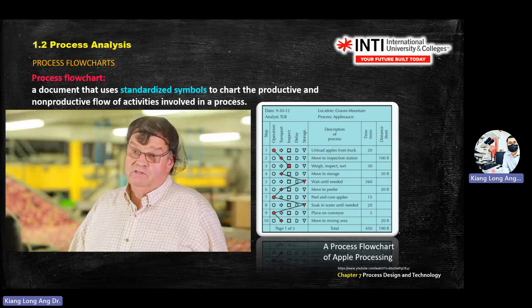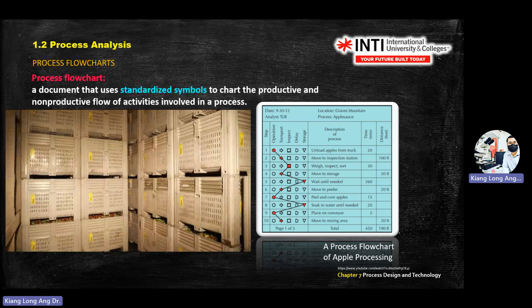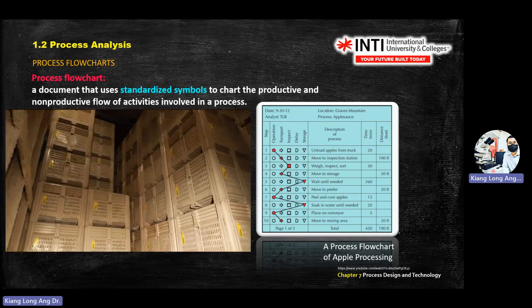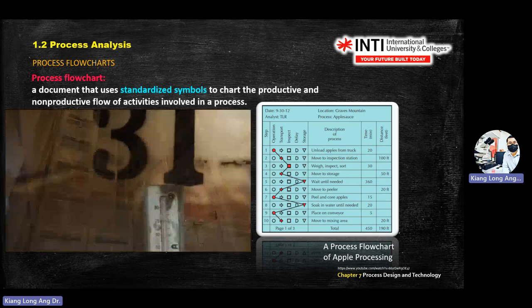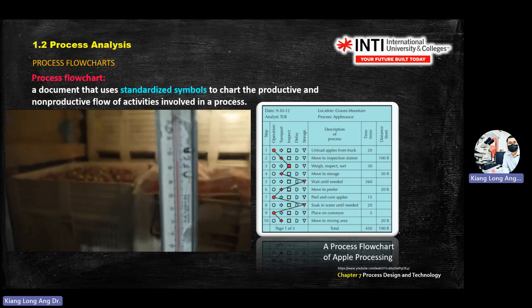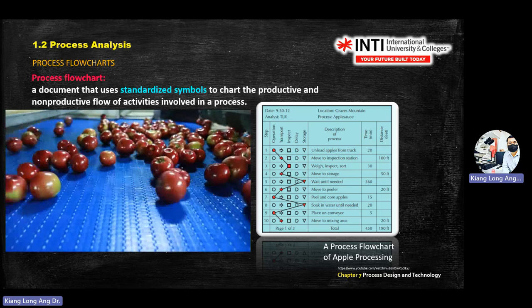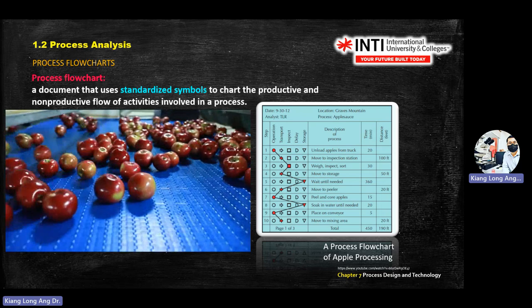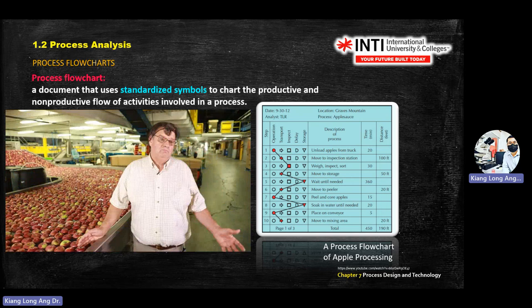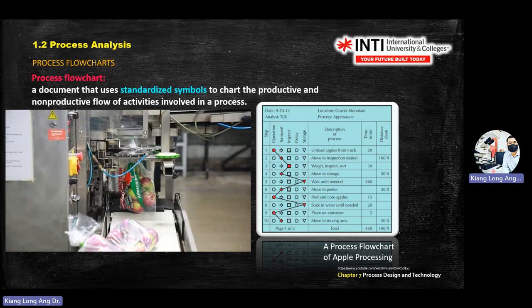The key to keeping apples fresh is picking them at the right time and then putting them into controlled atmosphere storage rooms. An apple breathes carbon dioxide out and oxygen in, so we reduce the oxygen level to suppress respiration — basically putting the apples to sleep. When we're ready to pack them, we put oxygen back in by letting in air, bring the apples back awake, then pack them and send them to the grocery store.